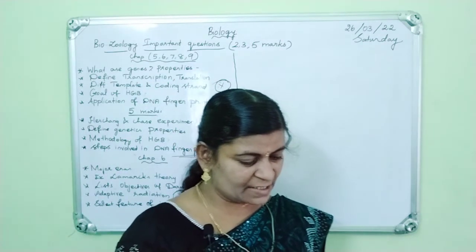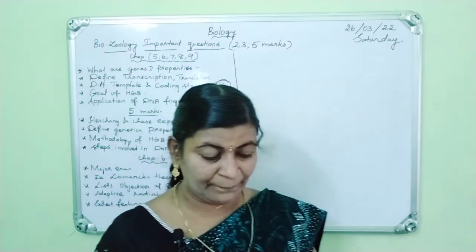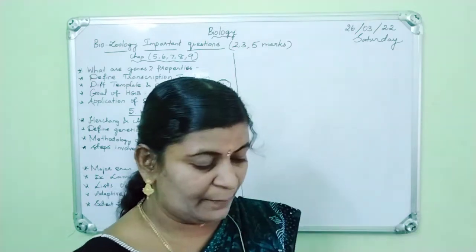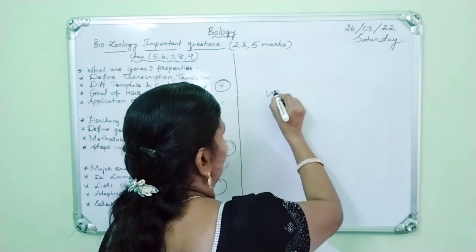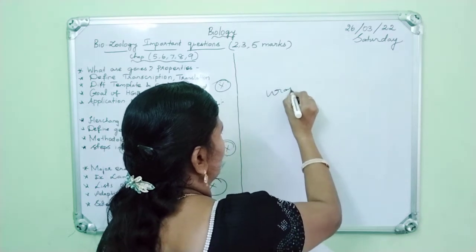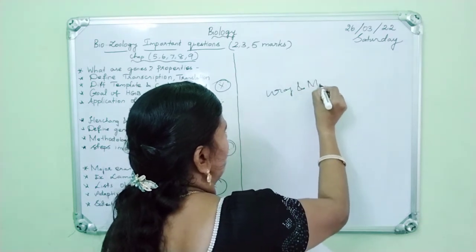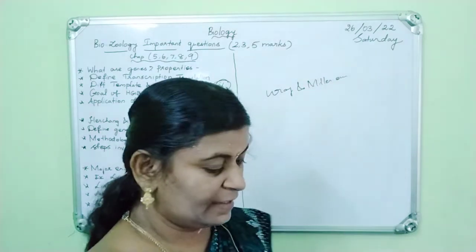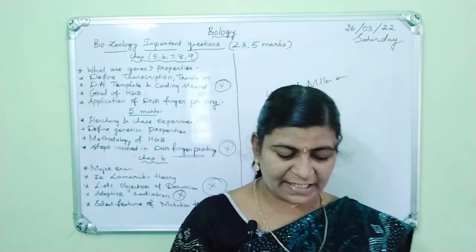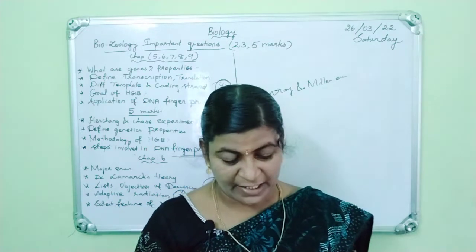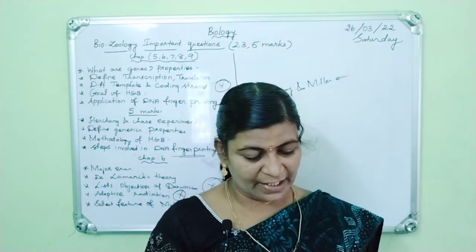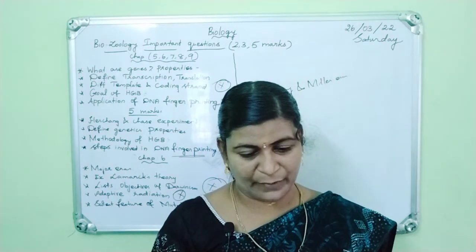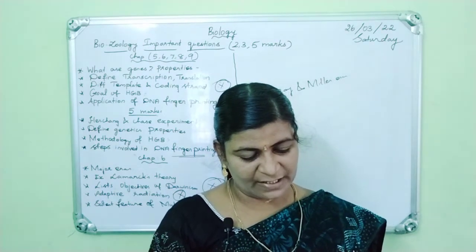In Chapter 6, the five mark questions are: describe the Urey and Miller experiment — it is a very important question. Then Darwin's theory of natural selection — it is an important five mark question. Then the modern synthetic theory — it is an important five mark question.